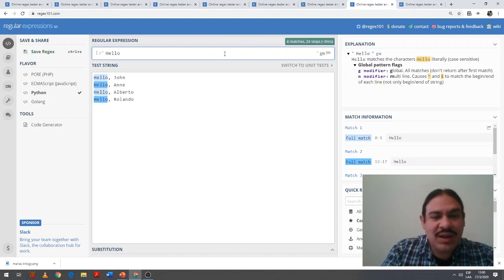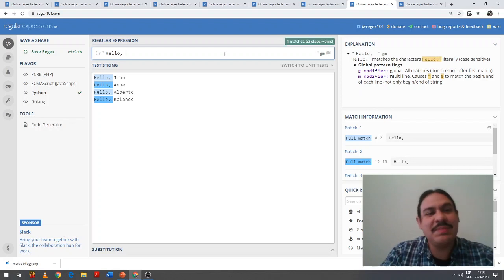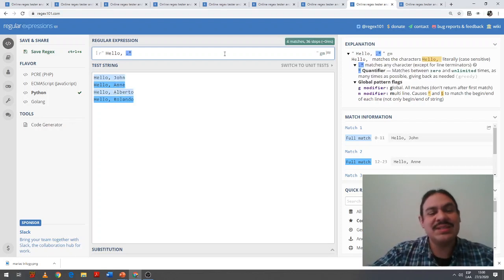First, we need literally the word hello, literally the comma, literally the space, and then any character as many times as it's needed. So this matches literally hello comma space, and then any character many times, which matches the names. This will find all of the four sentences.